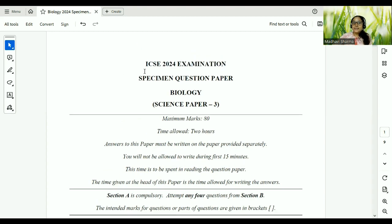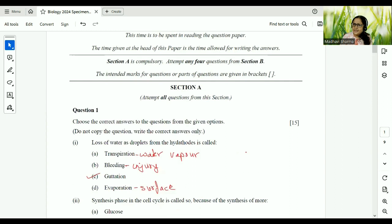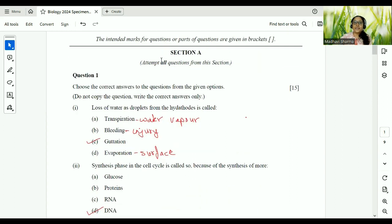Okay children, so ICSE 2024 examination, specimen question paper, biology that is science paper three. All this you guys are good in here. Let's start immediately. Section A. I have already solved this with my students. As you all know, I teach. I am from Pune and I am giving tuition. So this I have already solved it with my students just today. Choose the correct answers, MCQs for 15 marks.